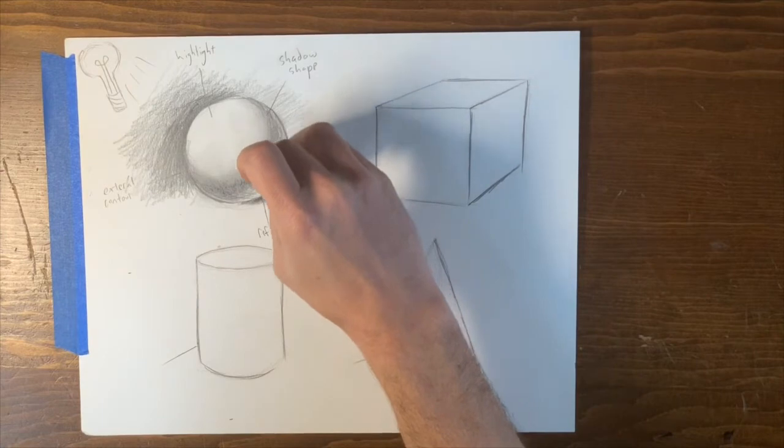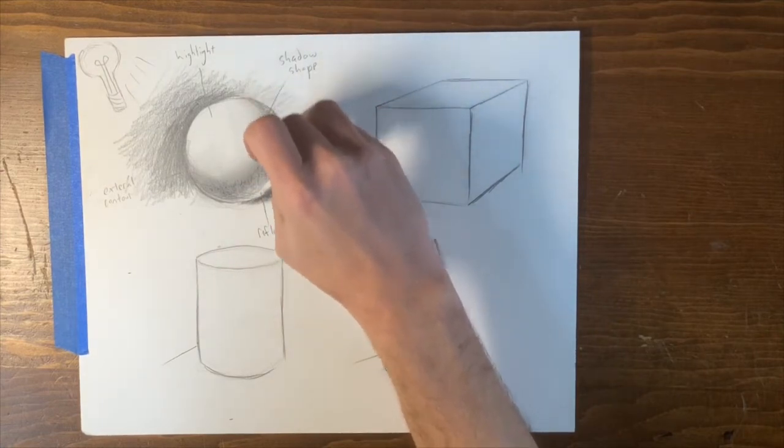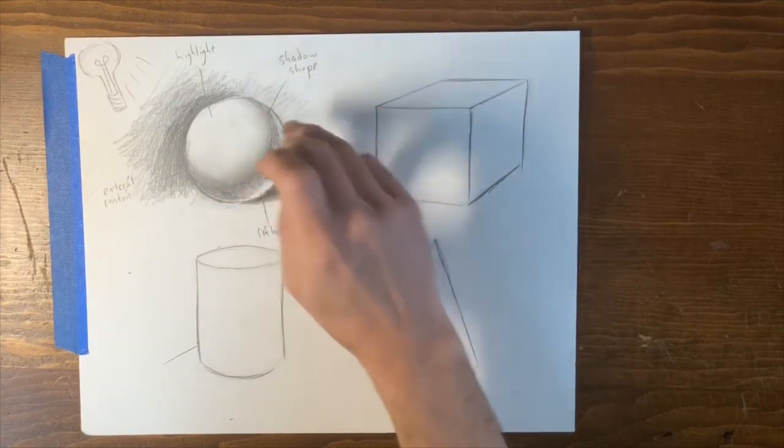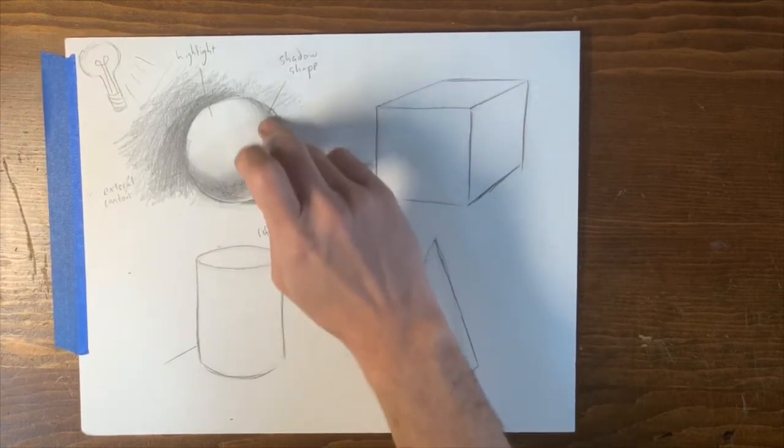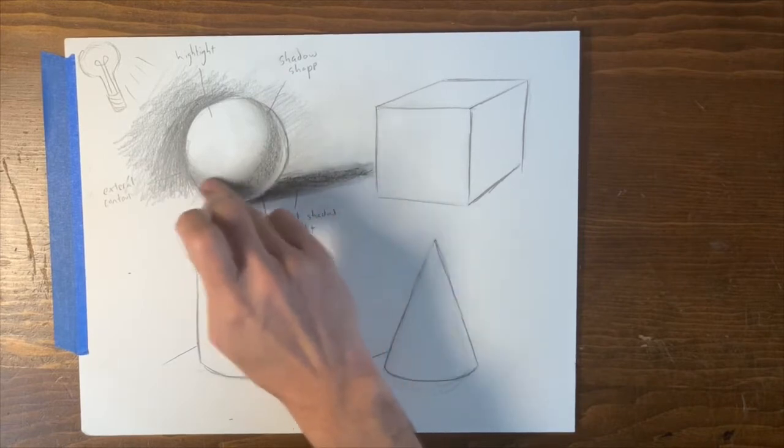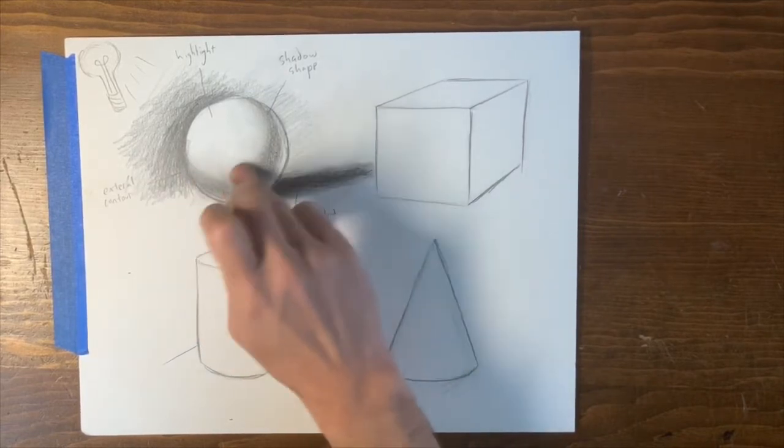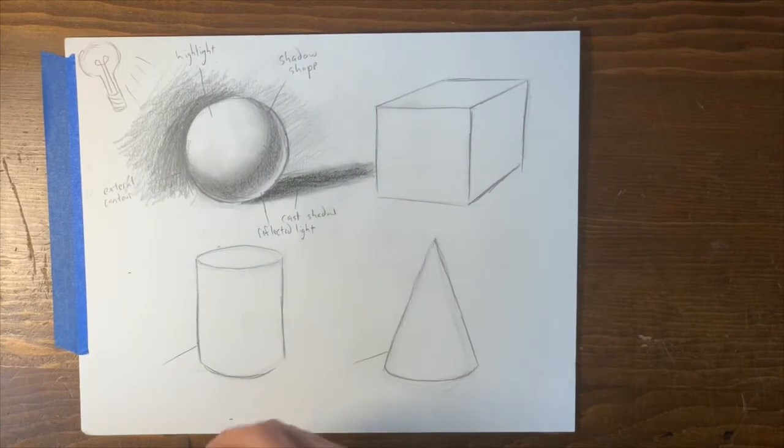So again, if you're having a hard time thinking of reflected light, I'll give you some beautiful examples through art history. But if you're having a hard time thinking about reflected light, really just trying to think of light as being a fire hose of water hitting something.